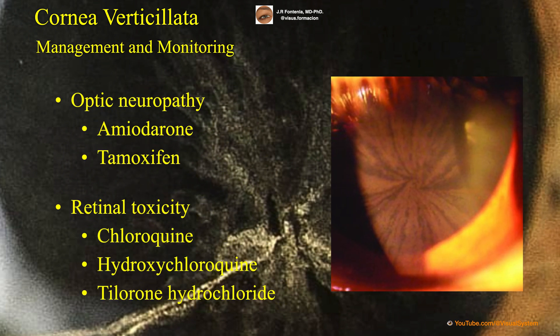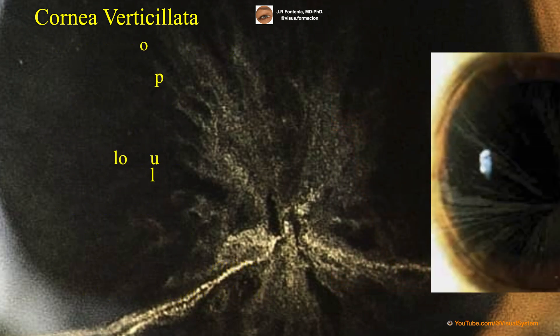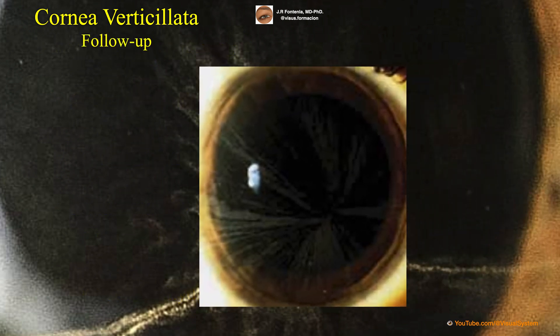For patients who may present with optic neuropathy or retinal toxicity, it will be necessary to consider reducing the dose of the drug or changing to a different drug if there is impairment of visual acuity. Patients with cornea verticillata should also have regular eye exams to monitor their condition and make sure it does not progress to more serious eye problems.